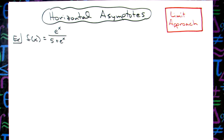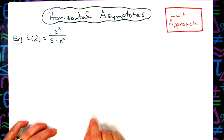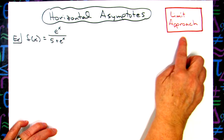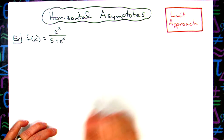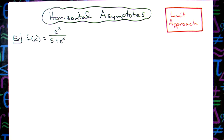In this video we're going to take a look at a rational function, and we're going to try to find some horizontal asymptotes using the limit approach. We're going to take the limit as x approaches infinity, and we'll also take the limit as x approaches negative infinity.